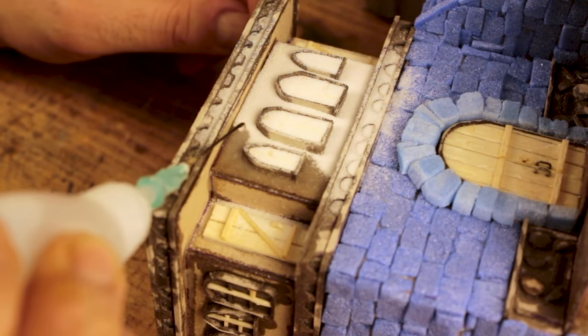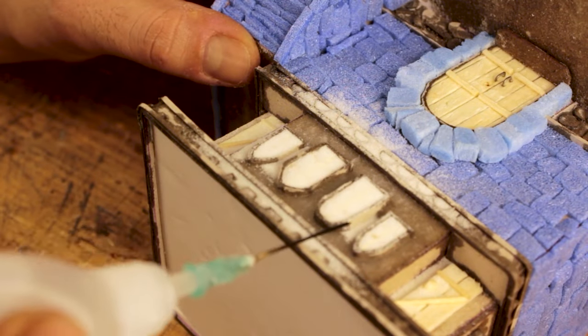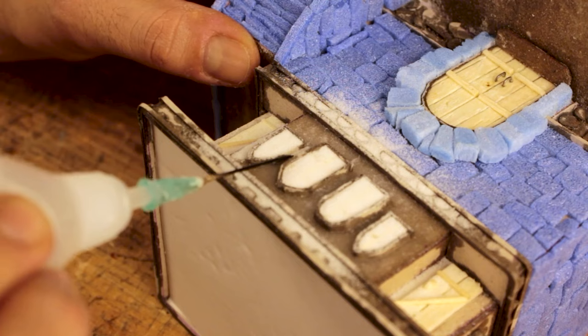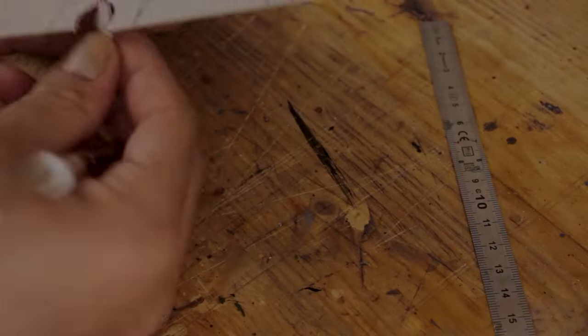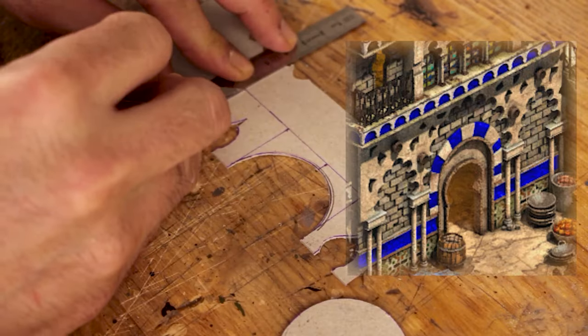As the second floor walls are not covered with stonework in the reference image, I applied some thick baking soda with multiple coats to achieve a cement look.